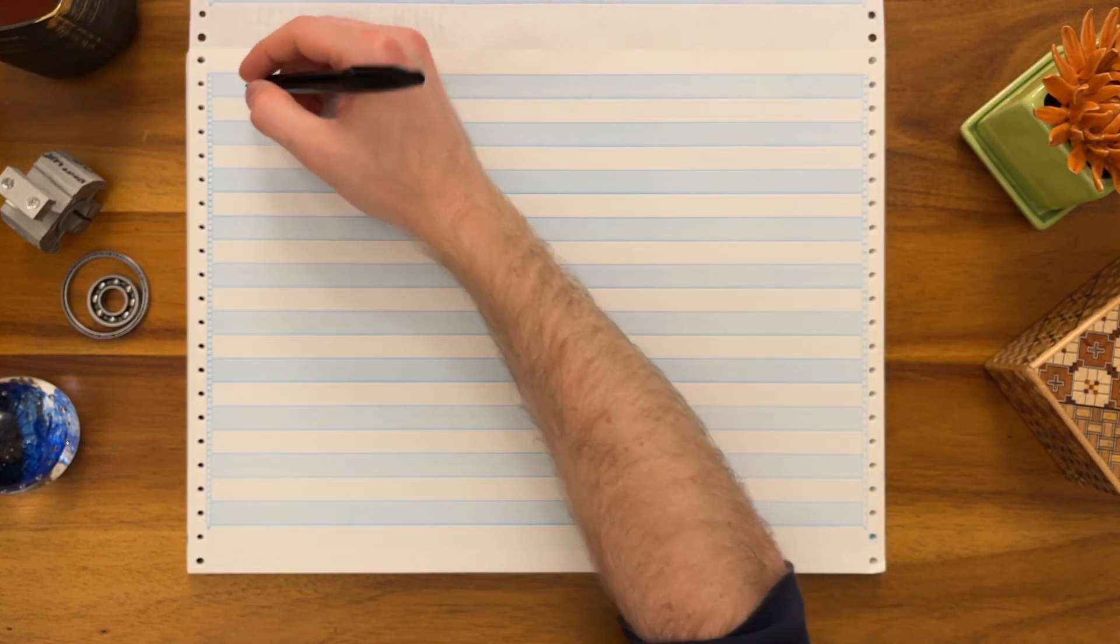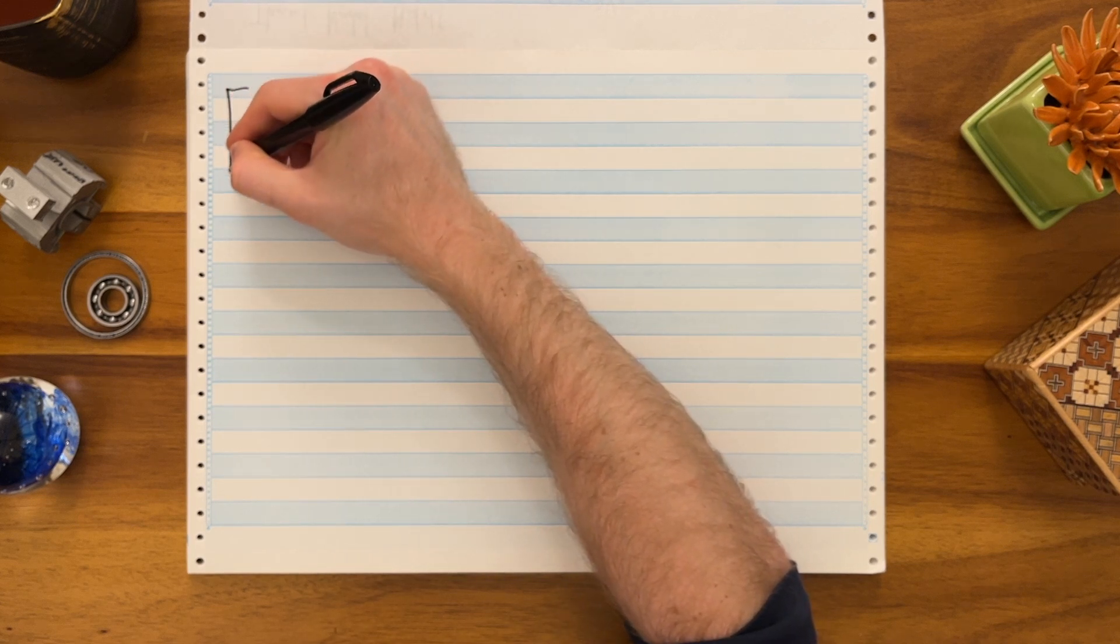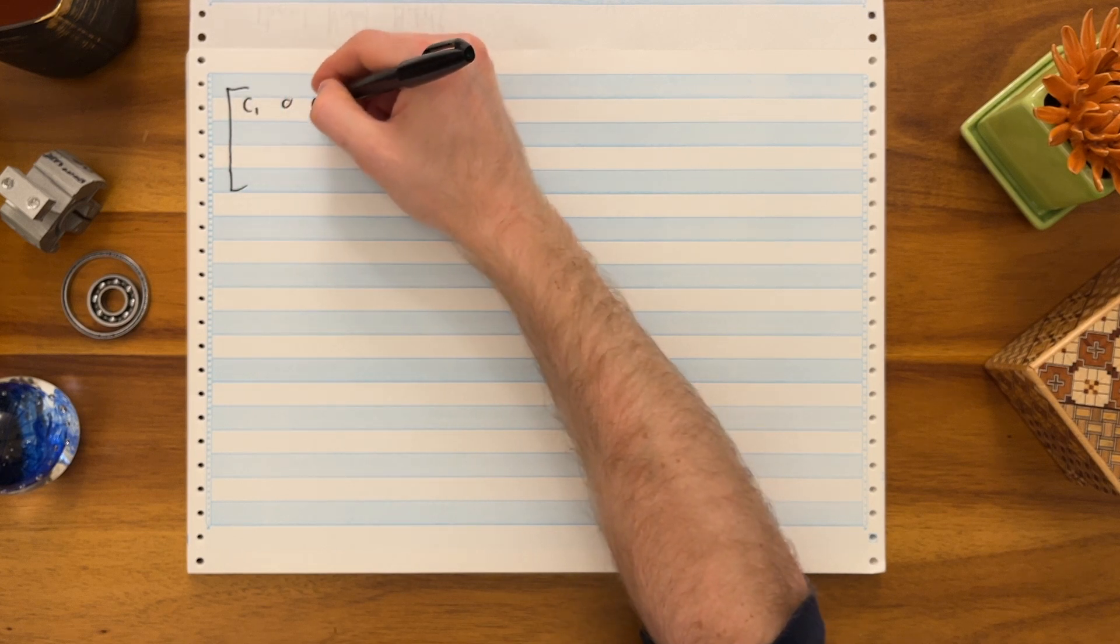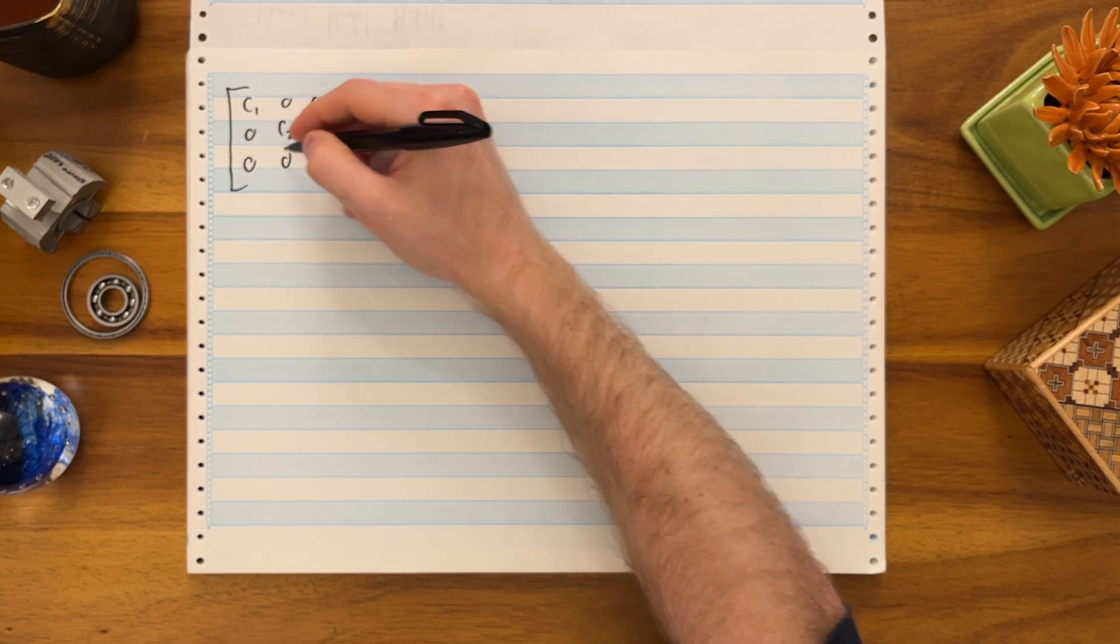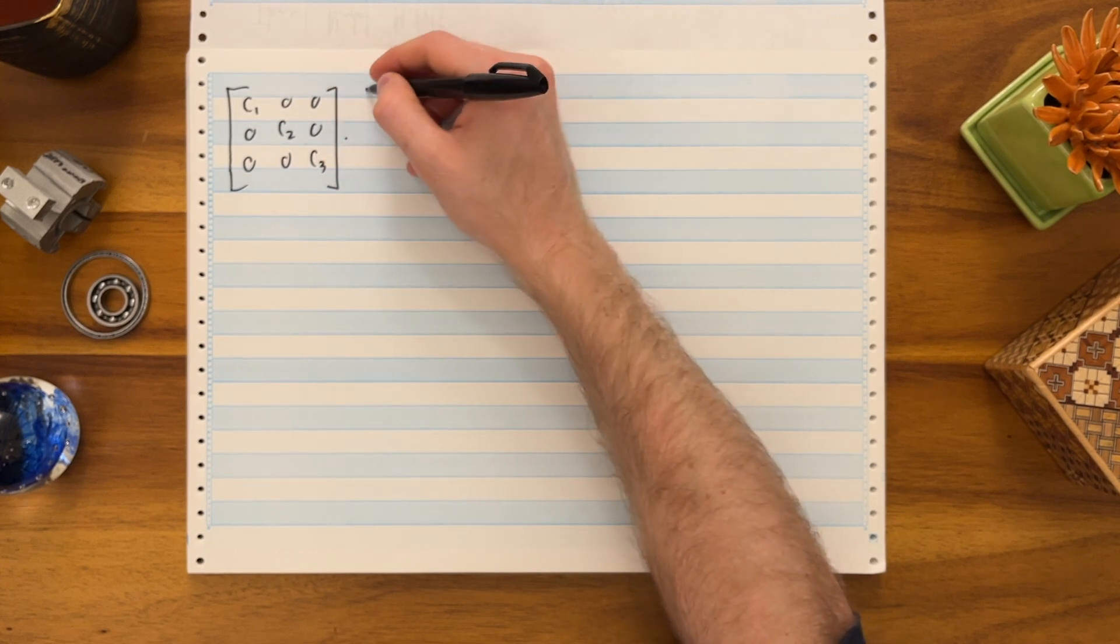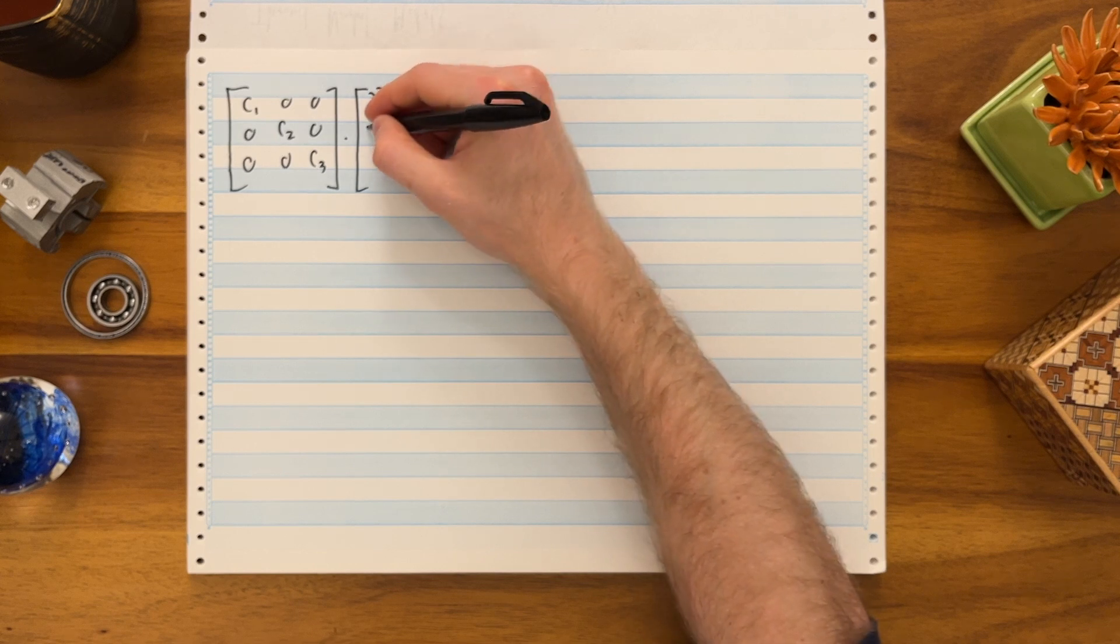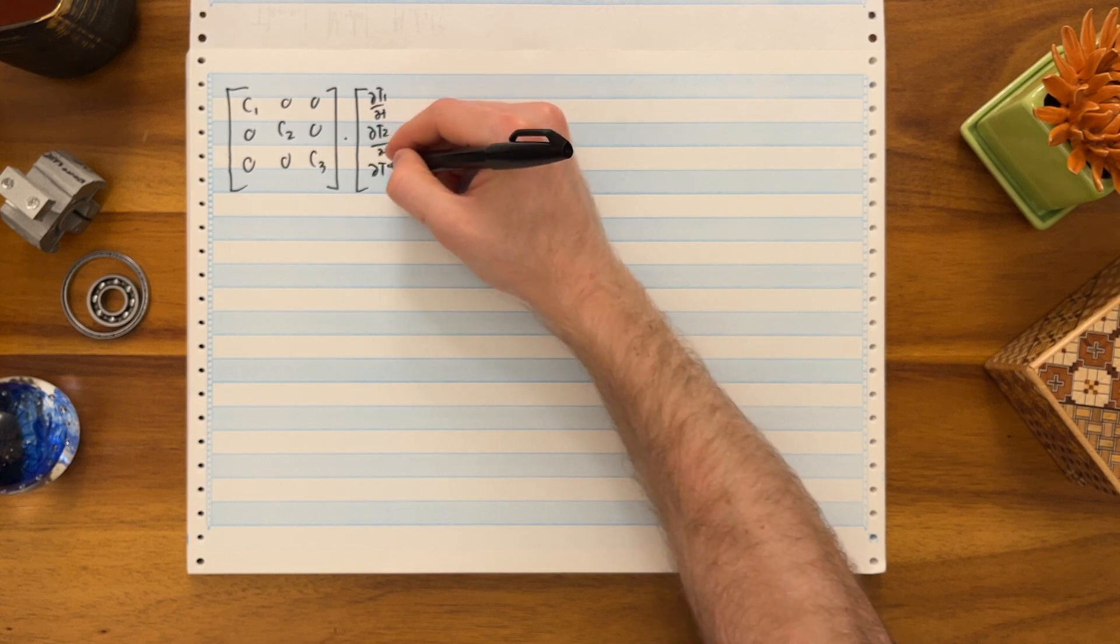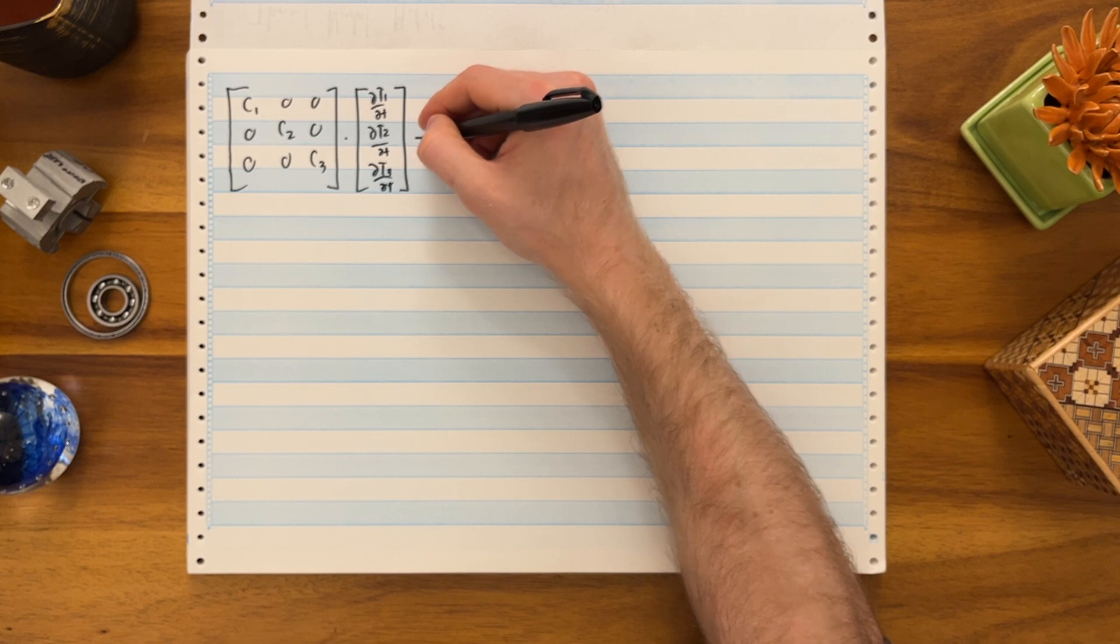But what are all these matrices? The C matrix is just a bunch of heat capacities. We end up with C1, 0, 0, 0, C2, 0, 0, 0, C3. I'm going to write this out without all the inverses, times the derivative matrix: delta T1 delta T, delta T2 delta T, delta T3 delta time, equals the power matrix.